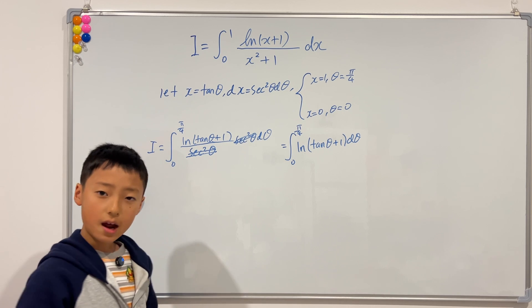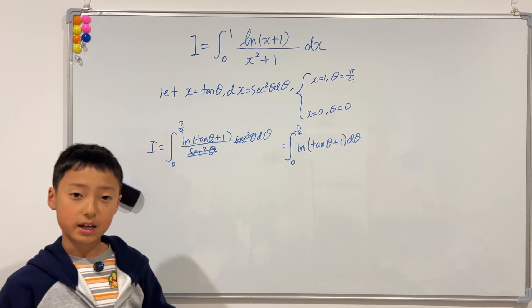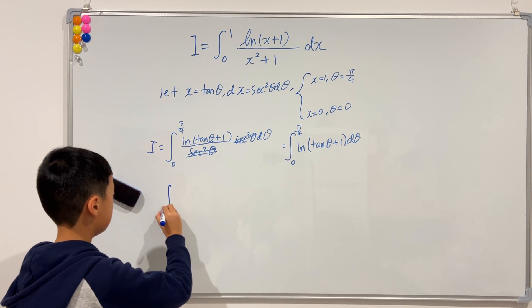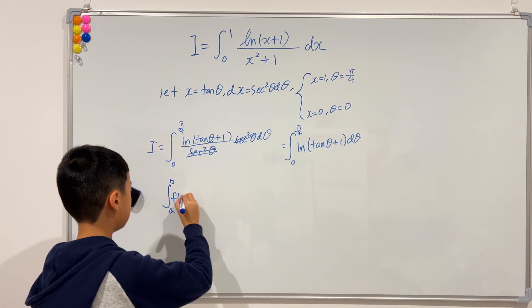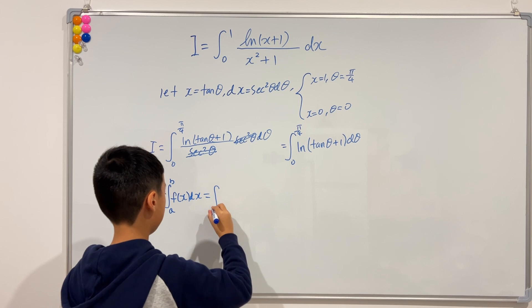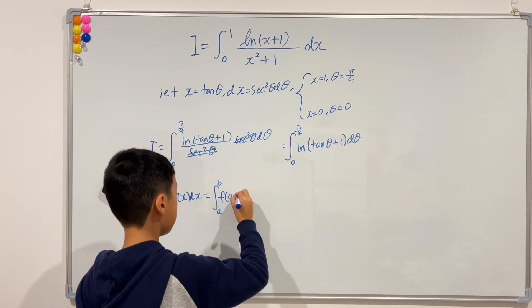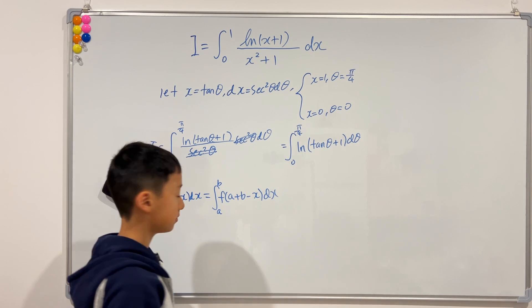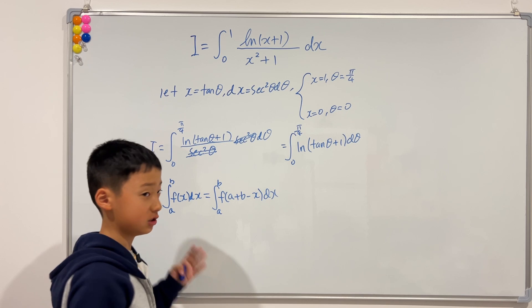Now we're going to use a property that I've explained in some of my previous videos. It states that the integral from a to b of f(x) dx is the same as the integral from a to b of f(a plus b minus x) dx. You can watch my previous videos to understand why this is true.